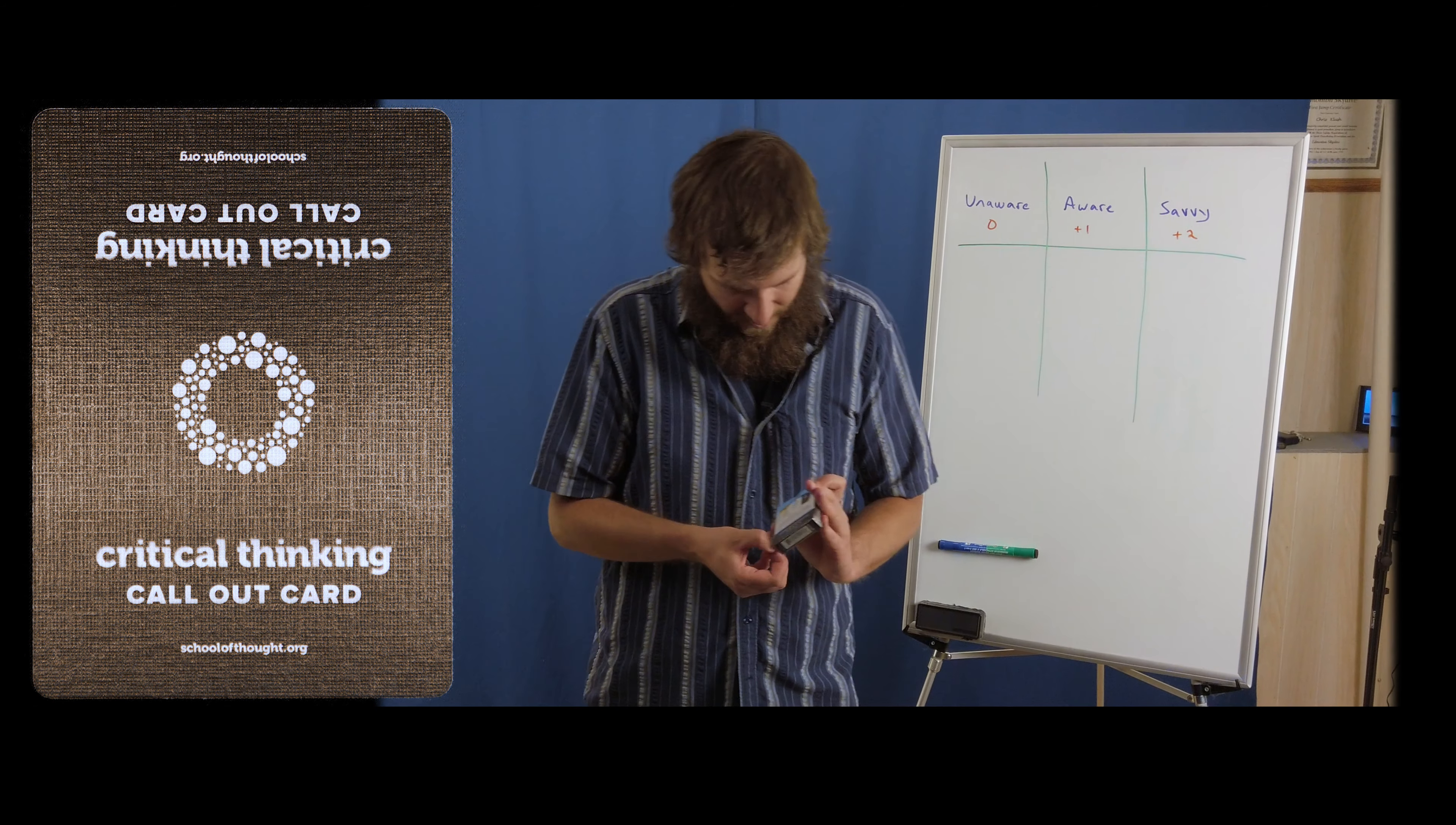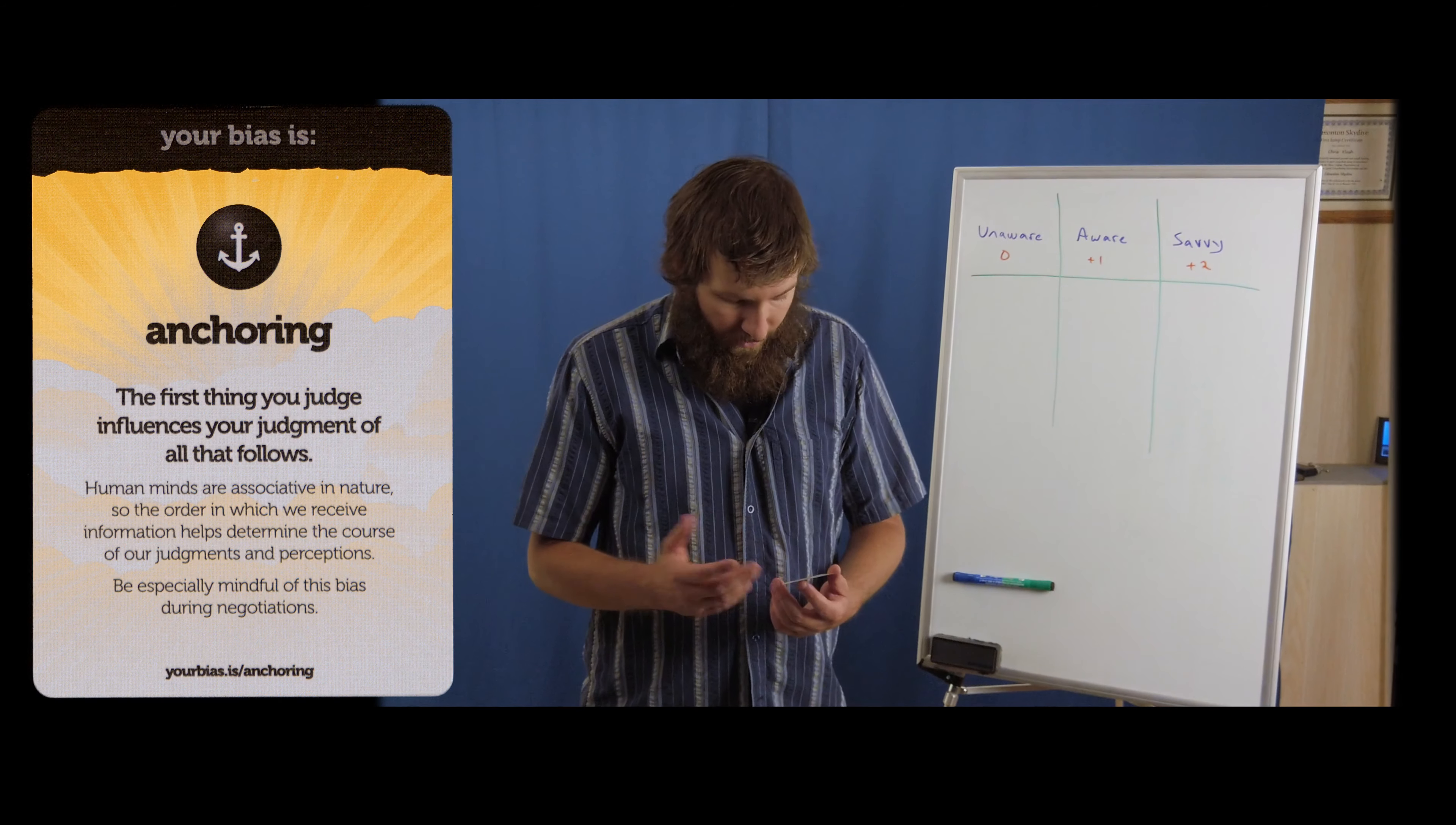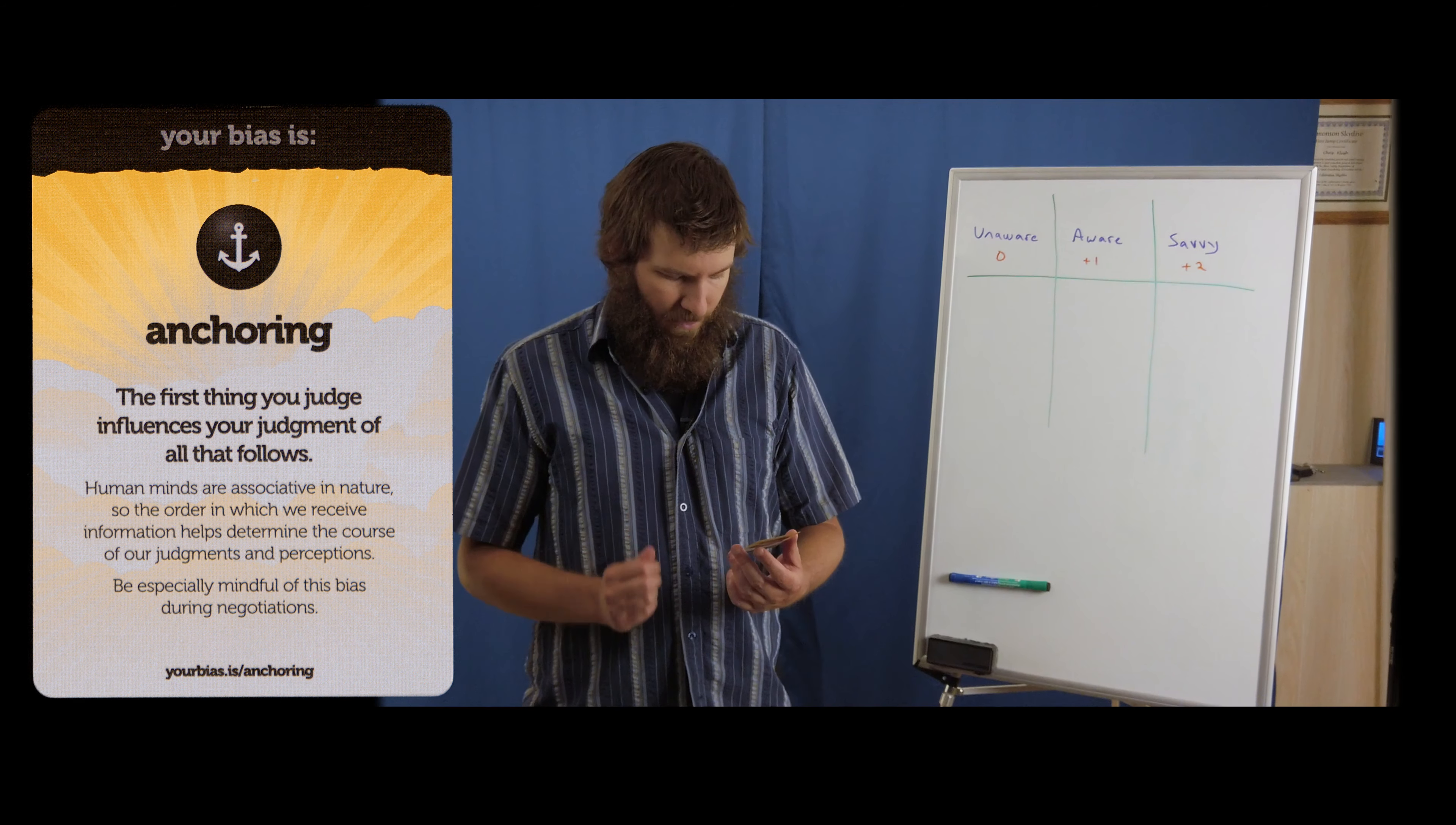For all intent and purposes, what do I want to start with? You know what, I'm going to start with the biases, just for the sake of why not. All right, so first and foremost is the anchoring. Now, I'm not going to read them out. So the first card is your biases anchoring. The first thing you judge influences that your judgment. Off the top of my head, I'm definitely going to have to give myself, I'm just going to do like a point here. Yeah, anchoring is something that I learned quite well with neuro-linguistic programming.